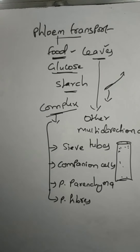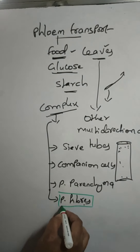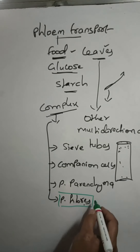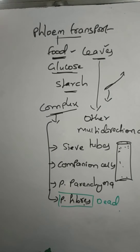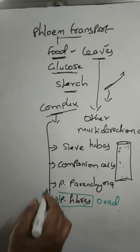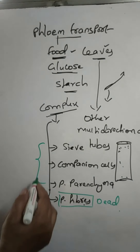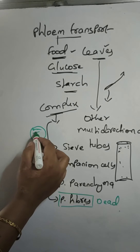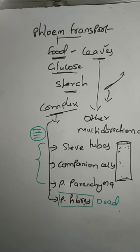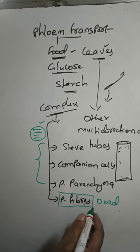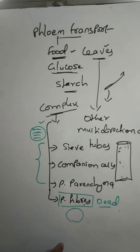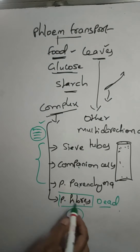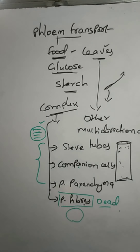Among these four types, the only dead-cell-containing tissue is the phloem fiber. The difference between dead and living cells is that living cells are filled with cytoplasm — the liquid fluid part of the cell. A cell without any cytoplasm — an empty cell — is called a dead cell. So the three cell types are living cells and phloem fiber is the dead cell.